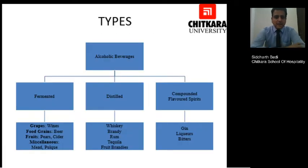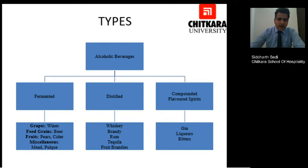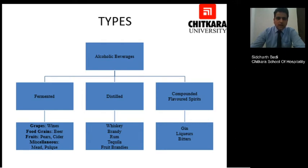If we talk about the types of liquors, we have fermented, which includes wines made from grains, beer made from fruit grains, pear and cider which are apple-based, and fruit-based brandies made from fruits. Then in miscellaneous we have mead. Moving forward, in distilled we have whiskey, brandy, rum, tequila, and fruit brandies like Calvados. And in compounded and flavoured spirits we have gin, liqueurs and bitters.